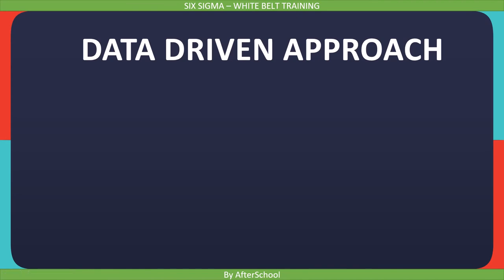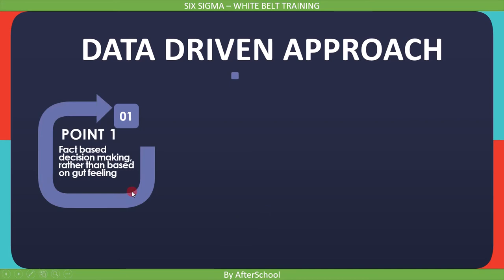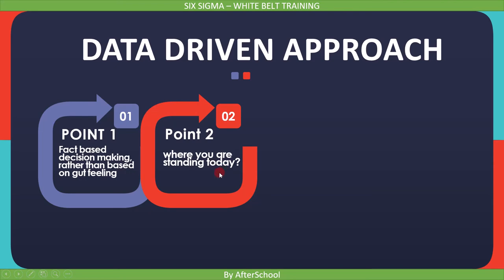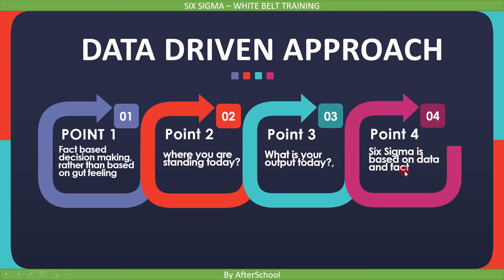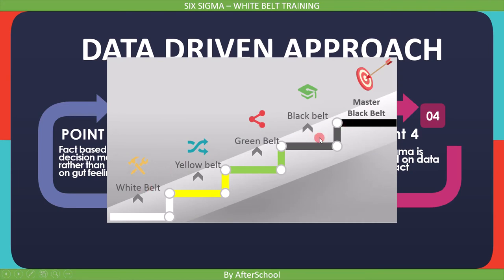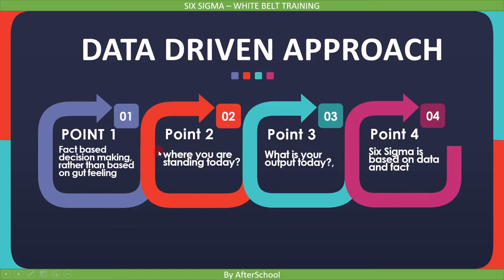The first philosophy is based on a data-driven approach. Data-driven approach means fact-based decision making, rather than based on a gut feeling. The improvements are based on facts, because unless you know where you are standing today and how you could improve, unless you know what your output is today, how can you improve your output? Six Sigma is based on data and facts, and that's the reason, once you go higher from white belt to yellow belt, green belt, and then to black belt, you will see that lots of statistics get involved — you want to make sense out of those numbers.